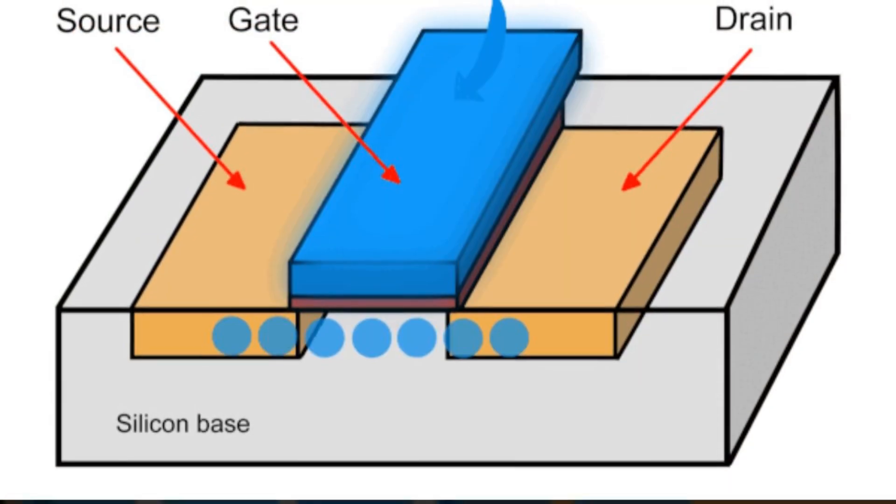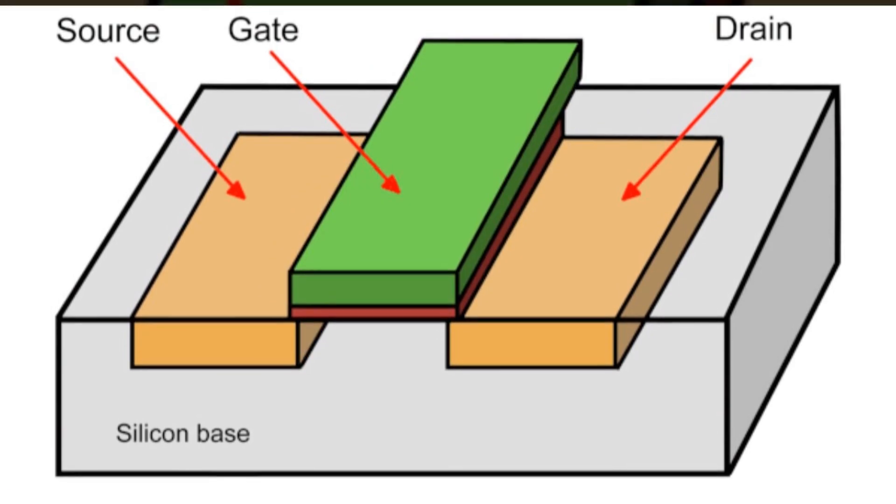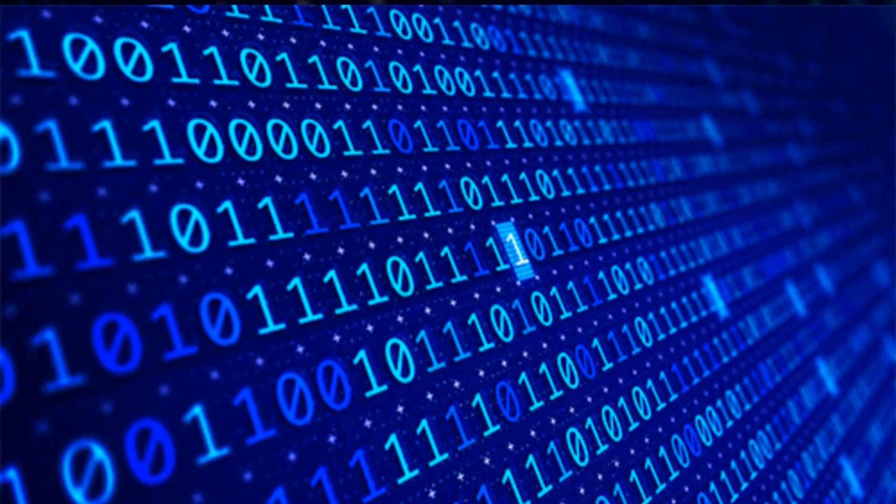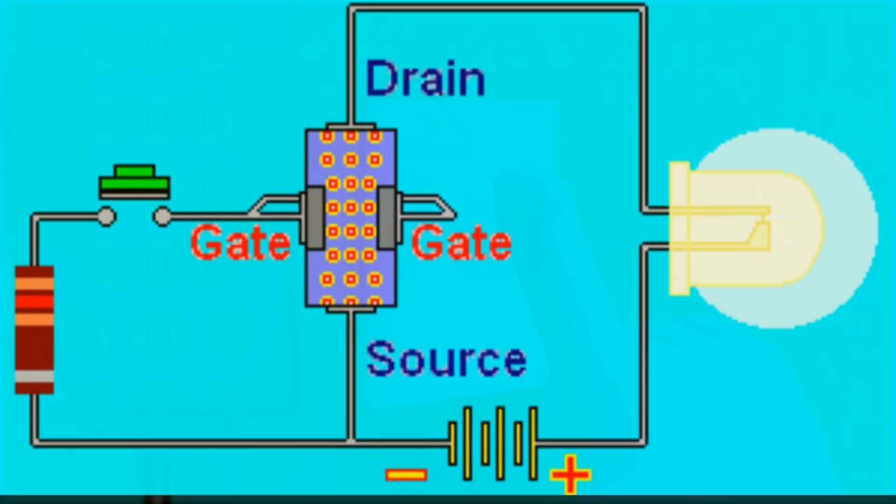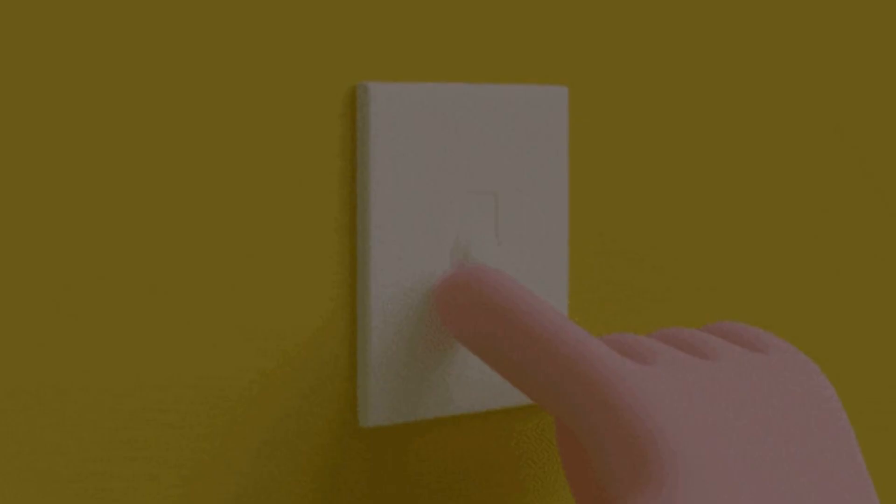This simple on-off functionality is the basis of binary code, the language of computers and electronics. So, a transistor works by controlling electrical current, acting as an on-off switch and making our electronic devices function.